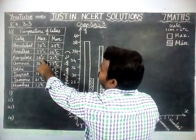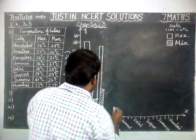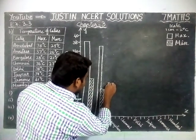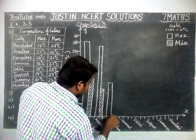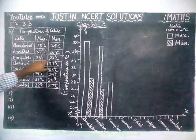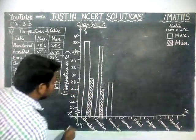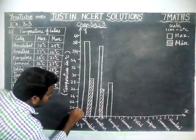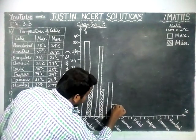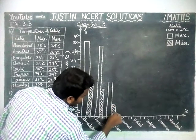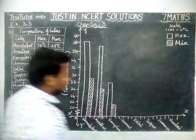Next is Bangalore. The maximum is 28°C — we have that exact number, so we draw from there to 28°C. Minimum temperature is 21°C. We have 20, so in between 20 and 22 this point is 21. To show the difference we use the cross line. Maximum is 28°C and minimum is 21°C.